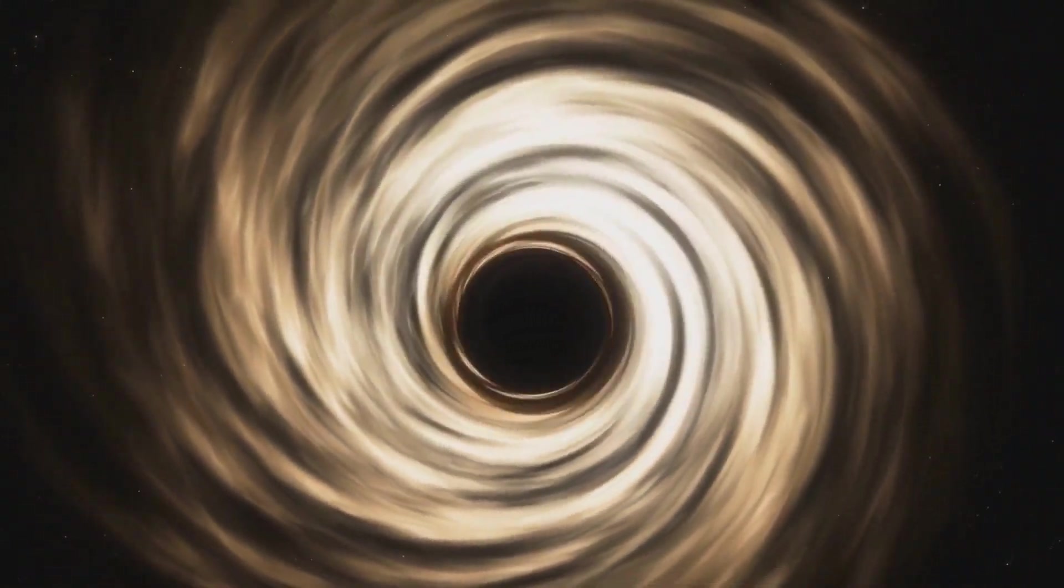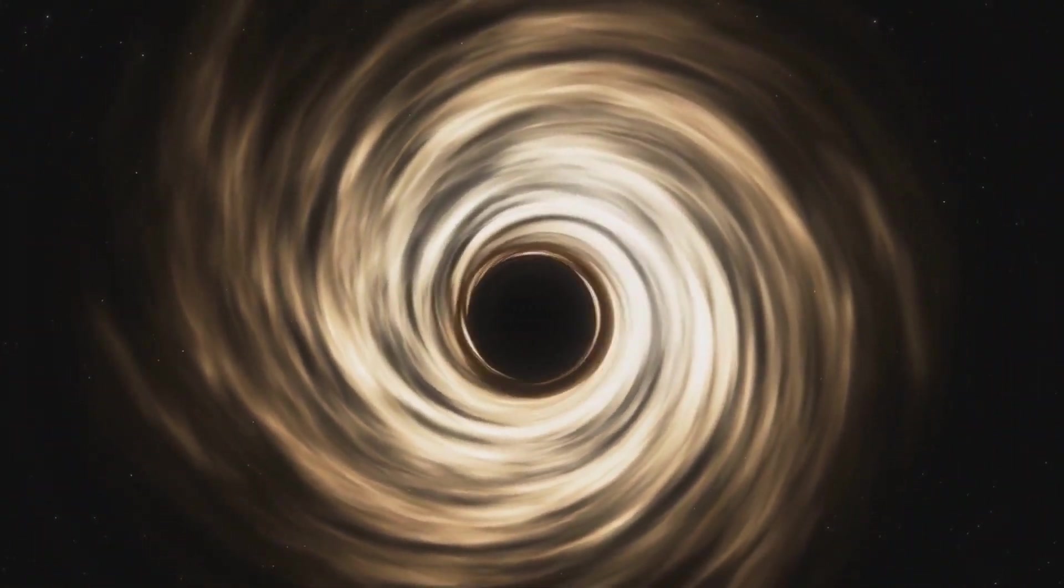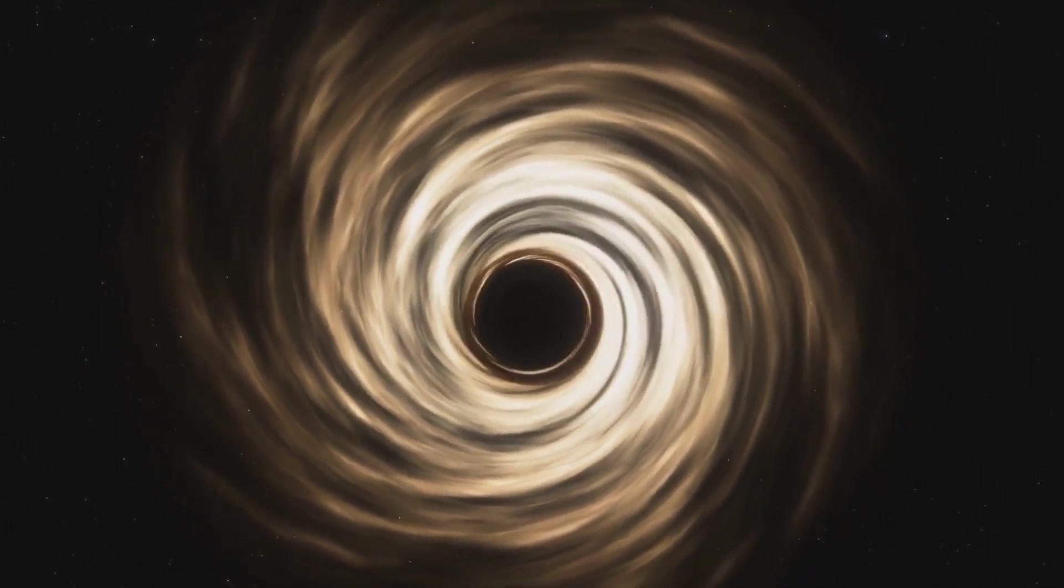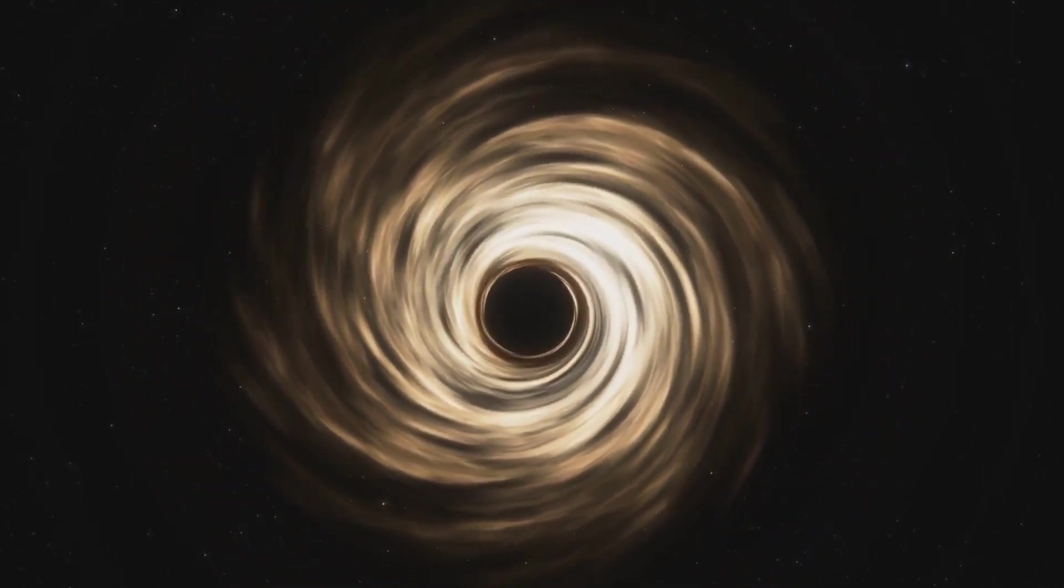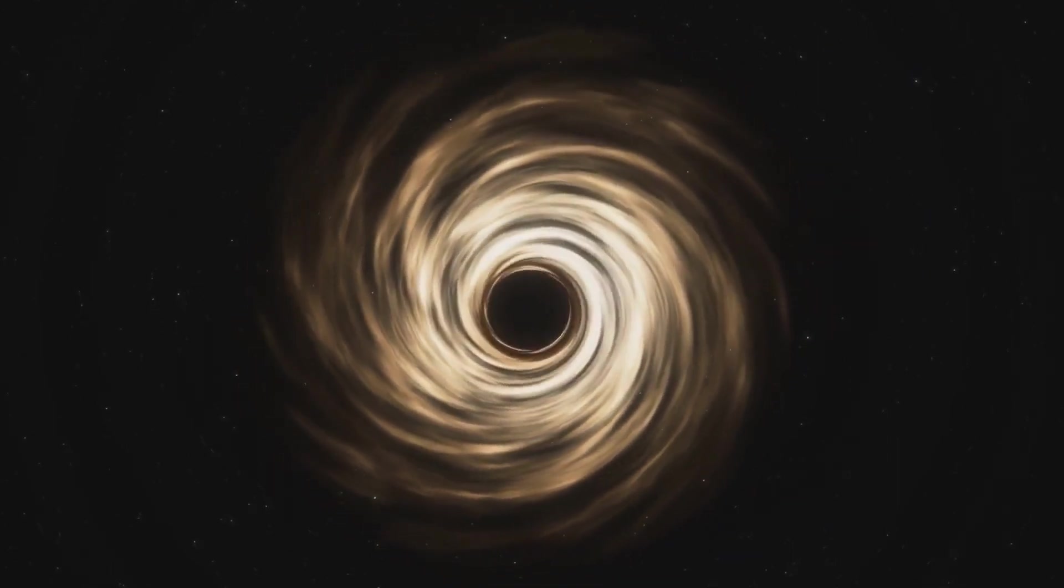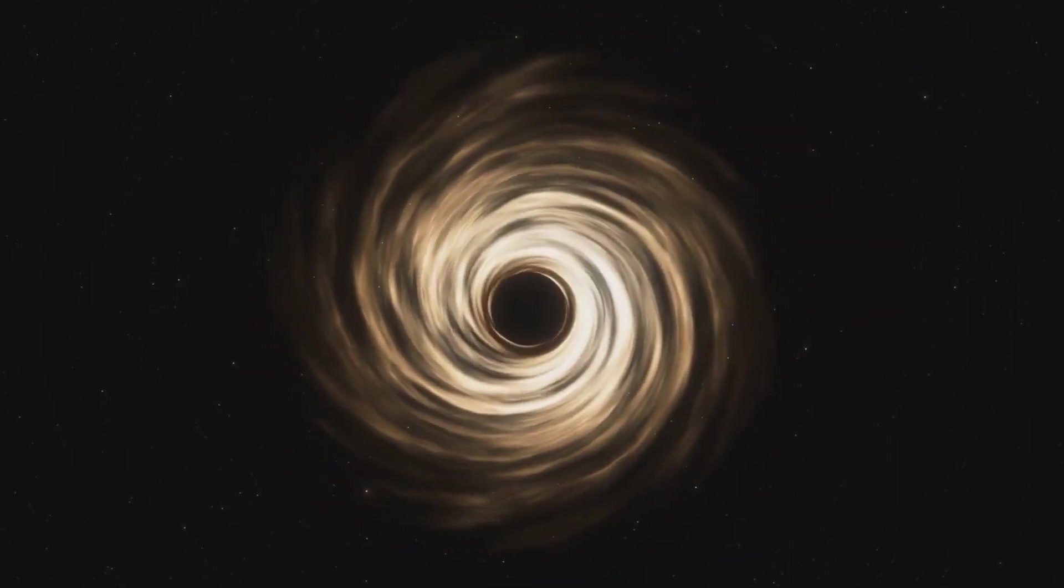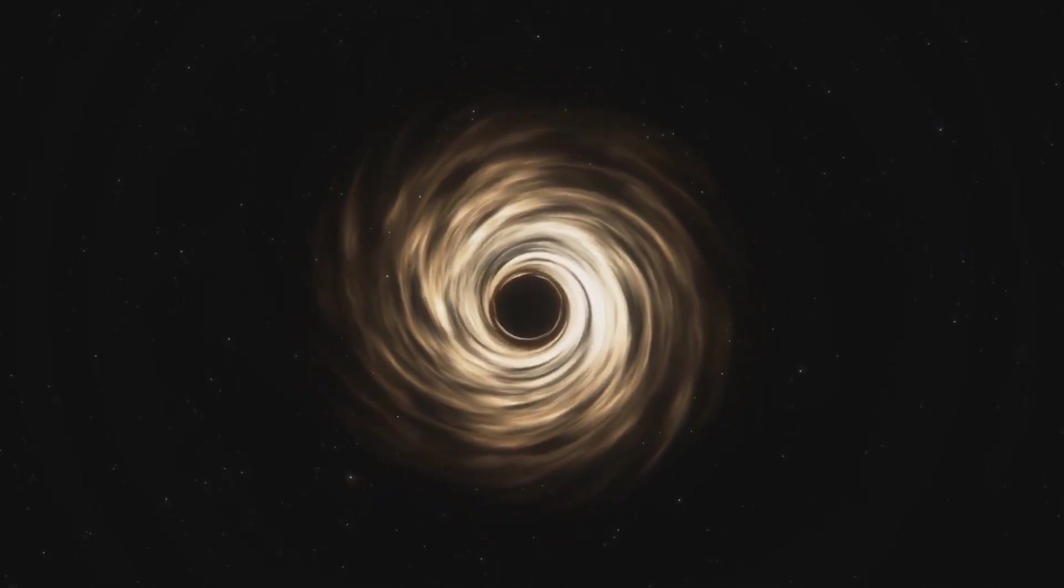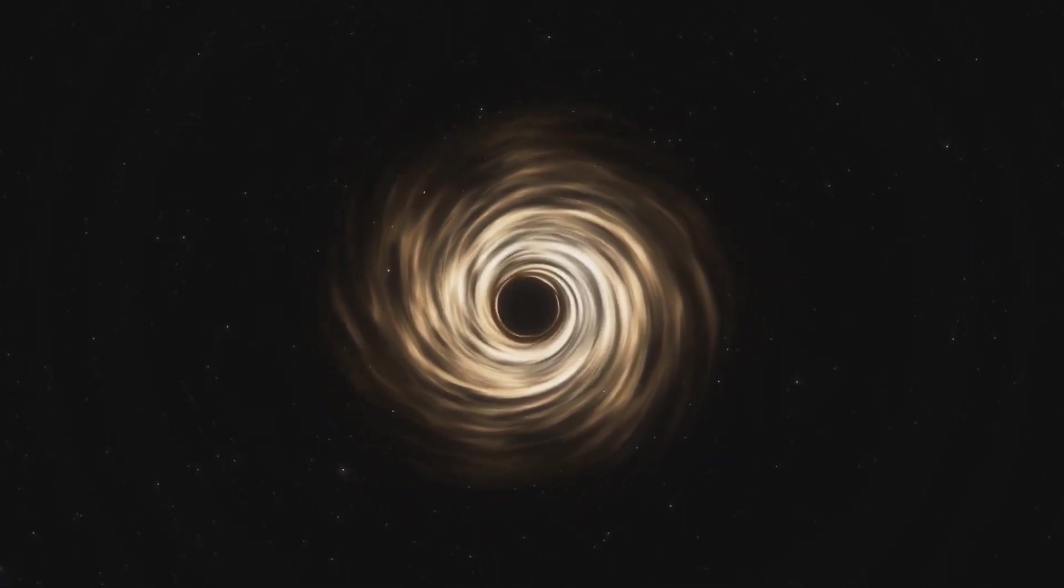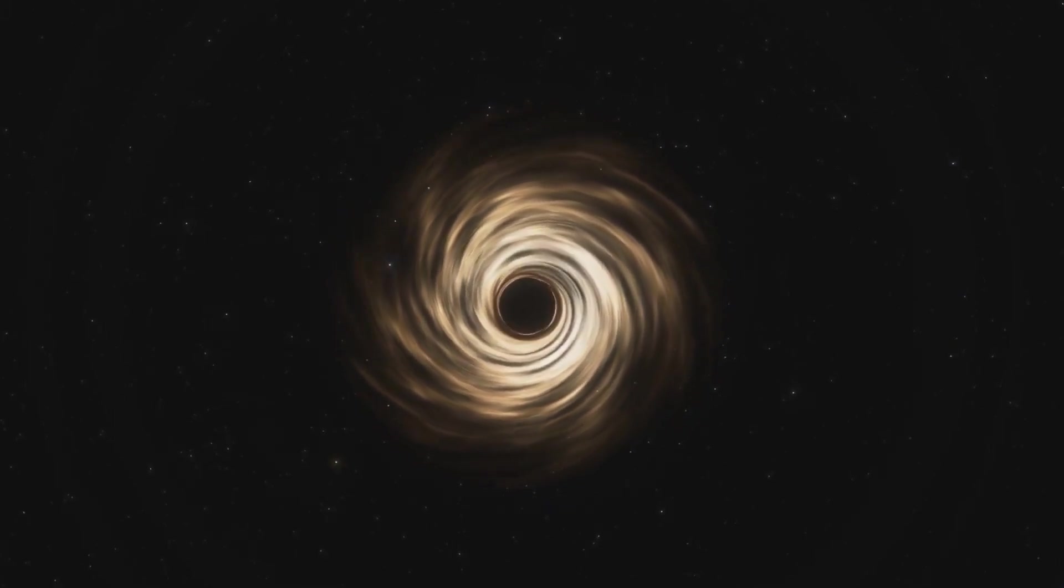And then there's the accretion disk. This is a swirling vortex of matter, gas, and dust, heated to extreme temperatures as it spirals into the black hole. The accretion disk is often what we see when we observe black holes, as the intense gravitational pull of the black hole superheats the matter, causing it to emit x-rays and other forms of radiation.